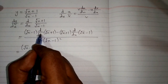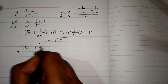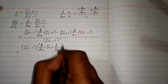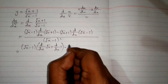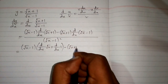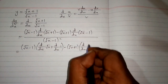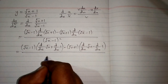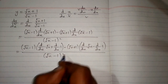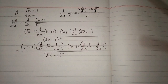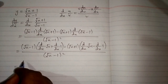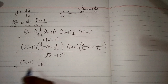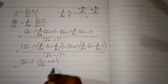Now we will apply this derivative on both the terms. So we have d by dx of square root of x plus d by dx of 1, minus square root of x plus 1 times the derivative of square root of x minus derivative of 1, upon square root of x minus 1 whole square. Now the derivative of square root of x is 1 upon 2 square root of x, and the derivative of 1 is 0.